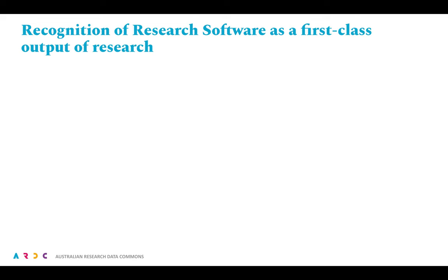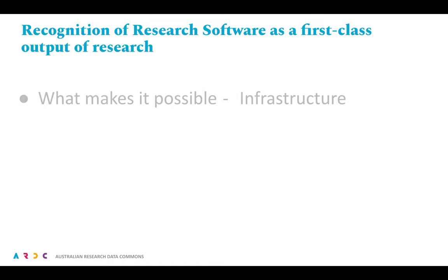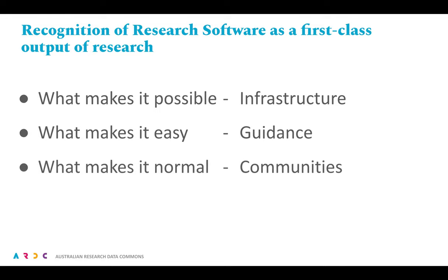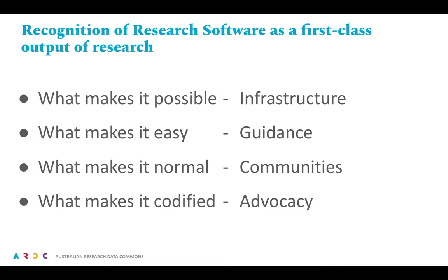Turning to a roadmap to address the call to see, shape, and sustain research software, and ultimately the actions of the agenda, we must consider for each: what makes the change possible? What makes these easy? What makes them normal? And what makes them codified? For those that are familiar with it, this is a variant of the Centre for Open Science Strategy for Culture Change.